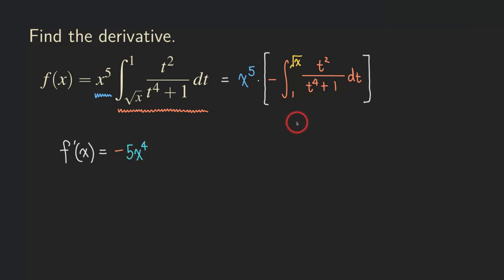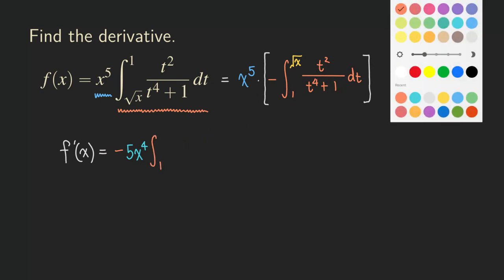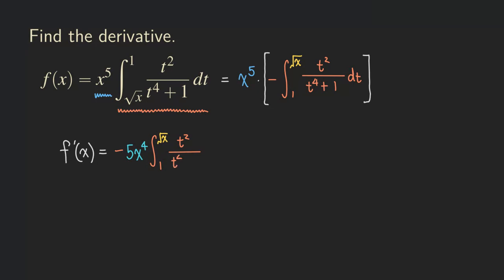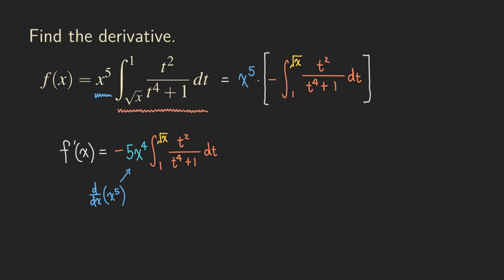And we are going to copy this integral: we already put down the minus sign, so we just copy the integral from 1 to the square root of x of t squared over t to the fourth plus 1 times dt. So that's the first term for the product rule — and note that 5x to the fourth is just the derivative of x to the fifth. The minus sign together with this integral is copying from the original. Now for the second term, we copy down the first function, x to the fifth.